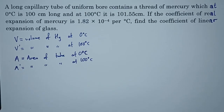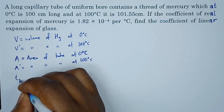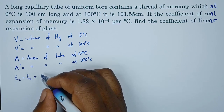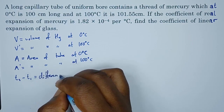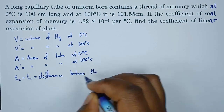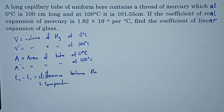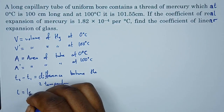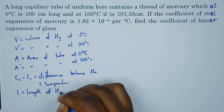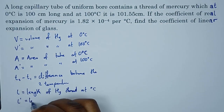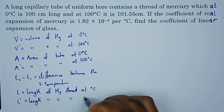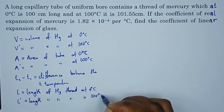Let the difference in temperature T2 minus T1 represent the difference between the two temperatures. Then L will represent the length of the mercury thread at zero degrees, and L prime will represent the length of the mercury thread at 100 degrees Celsius.